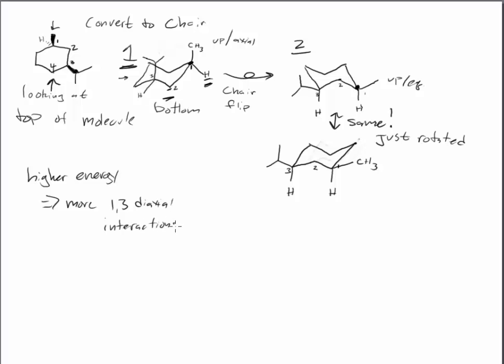As we learned from reading the text, a 1,3-diaxial interaction is a destabilizing interaction. If I can draw the hydrogen that lives at that axial position, we have a 1,3-diaxial interaction between the methyl and the hydrogen, and between the isopropyl and that hydrogen. We have two 1,3-diaxial interactions, not to mention the 1,3-diaxial interaction between the methyl and the isopropyl group.